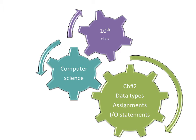As you know, a data type is an attribute of data which tells the compiler or any other translator how the programmer intends to use the data. Most programming languages support basic data types of floating point numbers, integer numbers, characters, and boolean type. Assignment statements copy a value into a variable, and input statements are used for input while output statements are used for output.